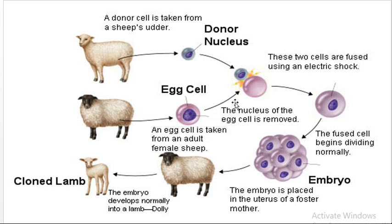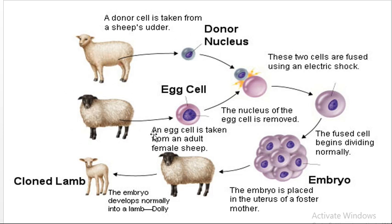The same organism's cell nucleus is transplanted into a host cell, and a new organism is produced, similar to the original. As shown in this diagram, here we have an egg cell from an adult female sheep, and the other donor is a somatic cell.